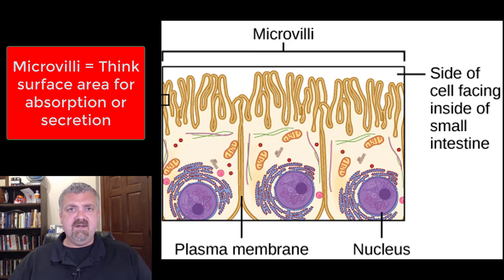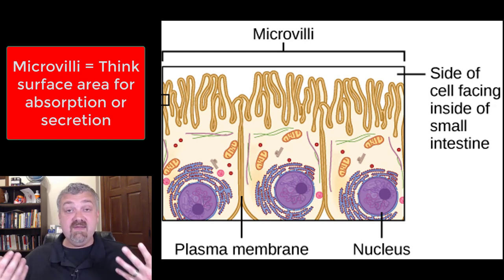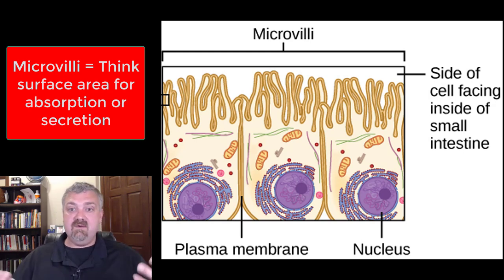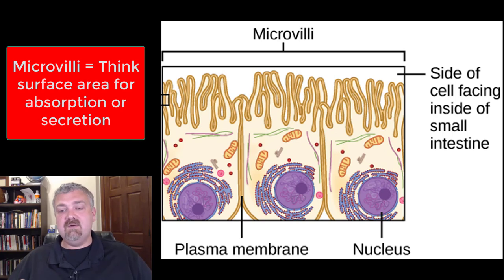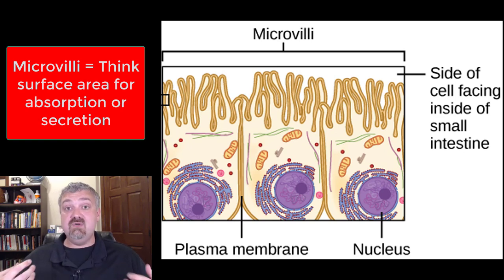Ciliated cells line the respiratory tract so they can move material up out of your lower respiratory tract so you can get rid of it — either swallowing it or spitting it out. For the microvilli, think the intestines. The stomach and the small and large intestine are lined with microvilli because they need to absorb and secrete a lot of material.